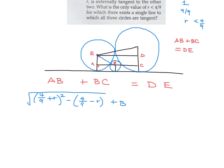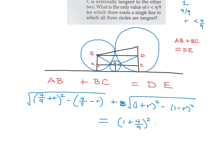BC would be similar, this time using radii 1 and r: BC equals the square root of (1 + r) squared minus (1 − r) squared. And DE uses radii 1 and 4 over 9: DE equals the square root of (1 + 4/9) squared minus (1 − 4/9) squared. So the equation is AB plus BC equals DE, and we're solving for r.